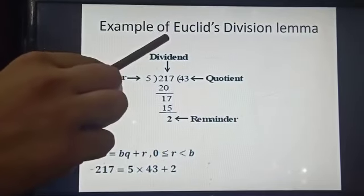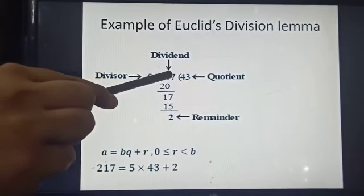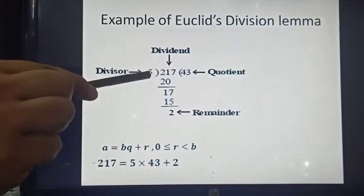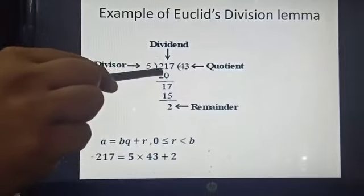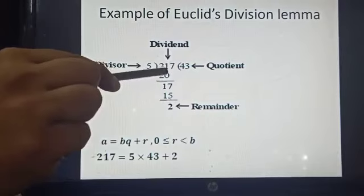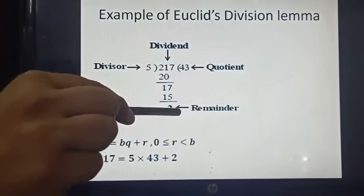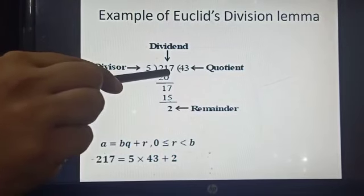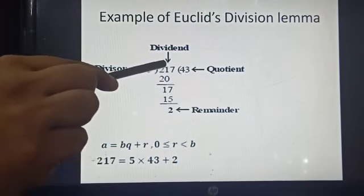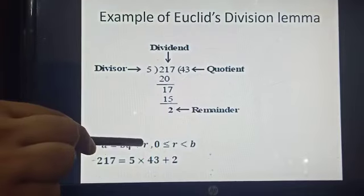This is an example of Euclid's division lemma. If you divide 217 by 5 — where 217 is the dividend and 5 is the divisor — the quotient is 43 and the remainder is 2. So you can write: 217 = 5 × 43 + 2. That is: dividend = divisor × quotient + remainder.